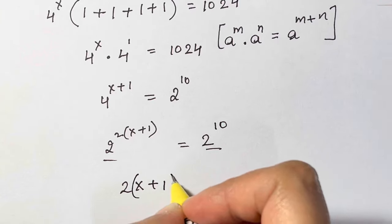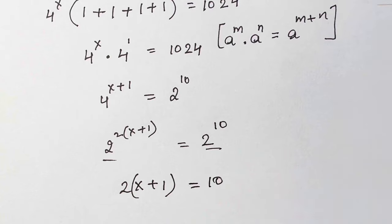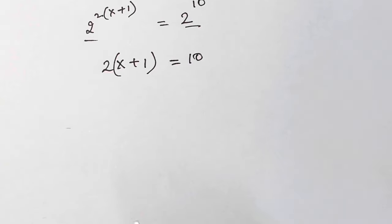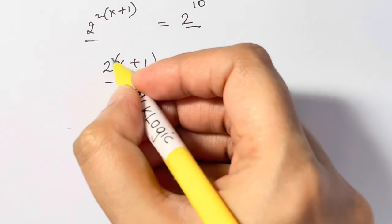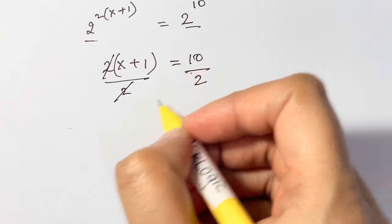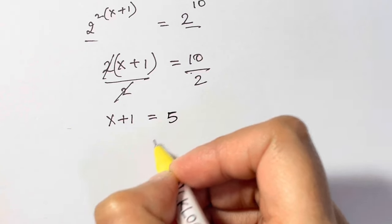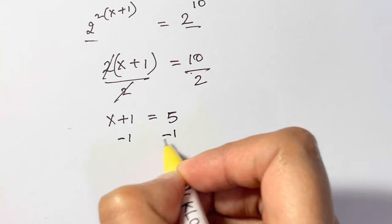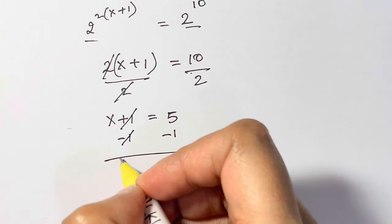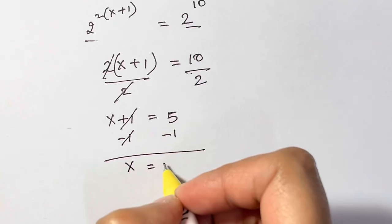Now just divide both sides by 2 to eliminate this 2, so you get x plus 1 is equal to 10 divided by 2, is 5. Now subtract both sides by 1. Plus 1 minus 1 gets cancelled, so you're left with x is equal to 5 minus 1, is 4.